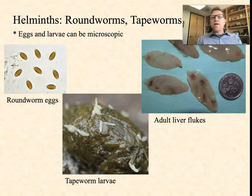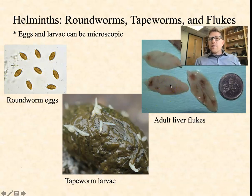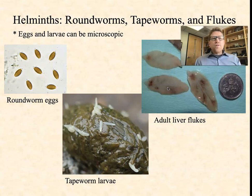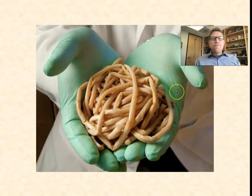Finally, the helminths are the three types of infectious worms: roundworms, tapeworms, and flukes. The eggs and larvae are often microscopic, whereas the worms themselves — like adult liver flukes — are usually visible to the naked eye. Roundworms can start as a tiny egg and grow to huge lengths, like Ascaris lumbricoides, which can be several feet long when expelled from the abdomen of an infected individual.